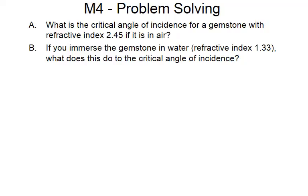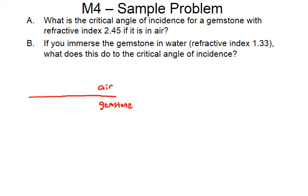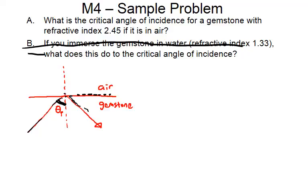All right, now for this one we want to find out the critical angle of incidence for gemstone. Remember with this, as the light comes in, the critical angle here is where theta 2 would be 90 degrees. But what happens instead is that the light stays in the gemstone and reflects inside. So let's go ahead and give this a try. Don't worry about part B of this. What is the critical angle here?